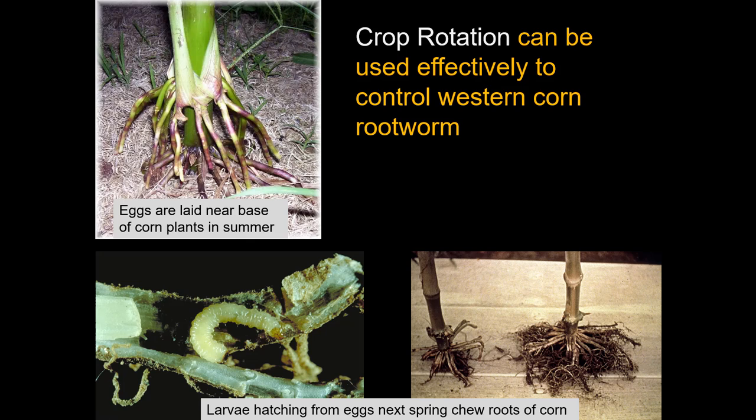This insect is the classic example of where crop rotation works. Because the habits of this insect limit it to laying eggs essentially in corn, and the eggs are the overwintering stage, if you rotate a field so that it is not corn the next year, the eggs hatch and the larvae have nothing to feed on. Corn on corn creates problems; corn followed by essentially any other crop causes the hatched larvae to starve because they can only develop on the roots of corn.